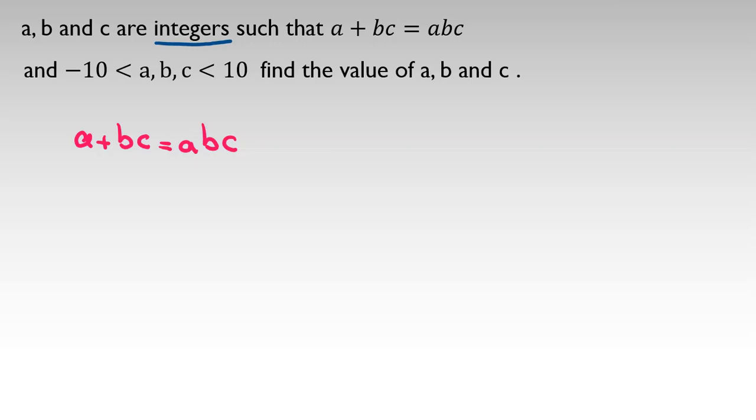Let's take all things to the right hand side: 0 = abc - bc - a. Now I factor from bc: 0 = bc(a - 1) - a.